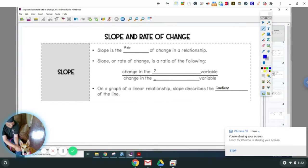So slope is the rate of change in a relationship. Slope or rate of change is a ratio of the following. It's the change of y over the change of x. And that's an x right there if you can't tell. Y always goes on top over x.